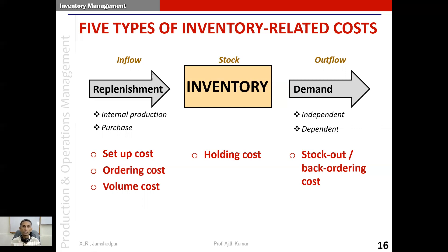Ordering cost covers all the effort required in acquiring an item from a supplier. In most large organizations, there is a whole purchase department with a vendor management system that identifies the hundreds or thousands of vendors the company acquires materials from. All costs associated with procurement — keeping track of vendors, conducting bidding processes, preparing and placing an order, and acquiring the item — come under ordering cost. Ordering cost and setup cost are alternates for each other: one is present when the other is not.